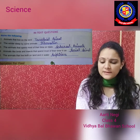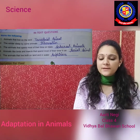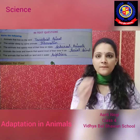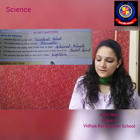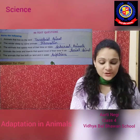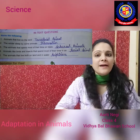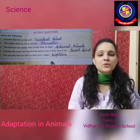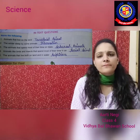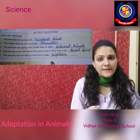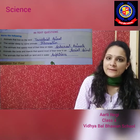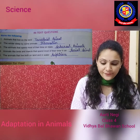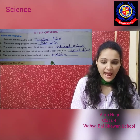Question number four: animals like birds and insects that spend most of their time in the air — they are called aerial animals. They spend most of their lifespan in the air, so they are called aerial animals. Question number five: animals that live both on land and in water — they are called amphibians.